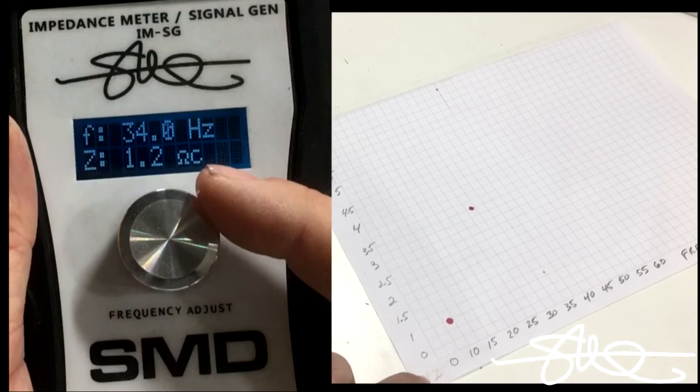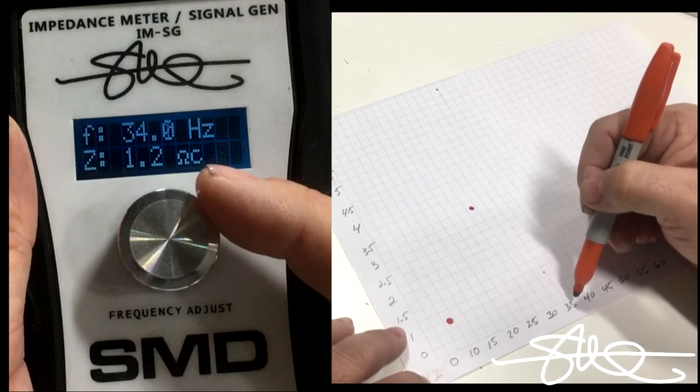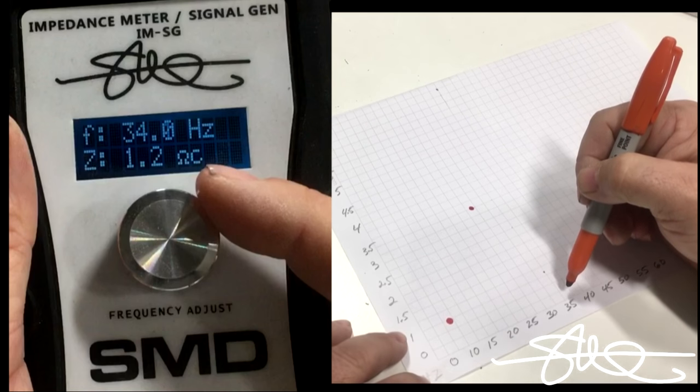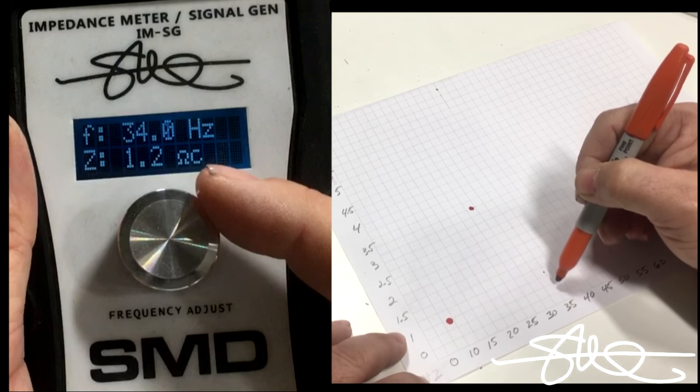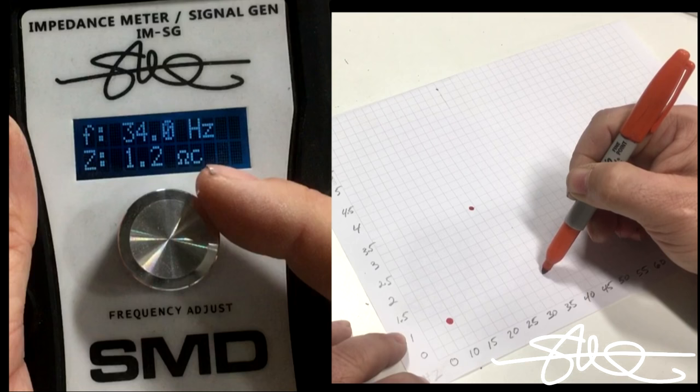Our next dip is going to be right around at 34Hz, and that's going to be 1.2 ohms. So right here, just below 35, and right about here.